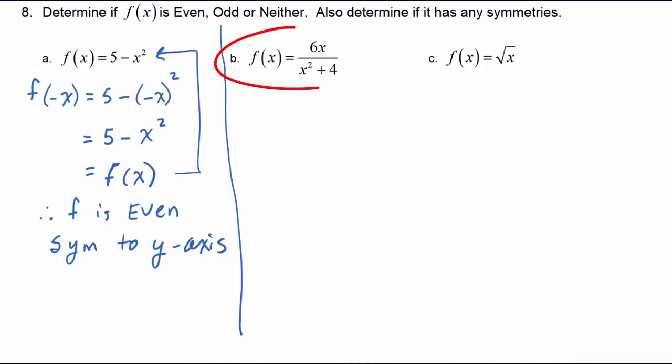In example b, we have f of x is equal to six x over x squared plus four. So then f of negative x is equal to six times negative x divided by negative x squared plus four.